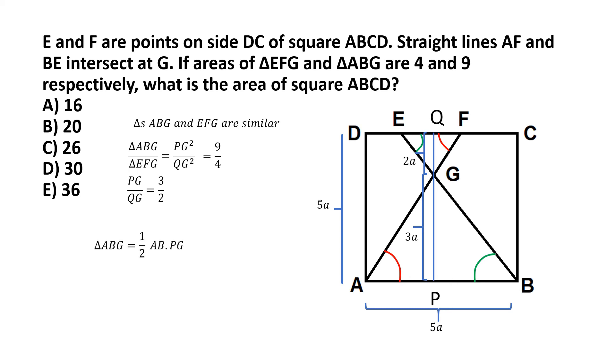Well, area of a triangle is basically half base multiplied by altitude. So the base is AB, the altitude is PG, so you can write area of triangle ABG is equal to half AB multiplied by PG. And AB is 5a and PG is 3a. So we have half 5a multiplied by 3a which makes it 15a² by 2.